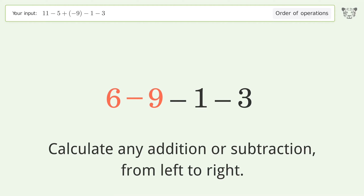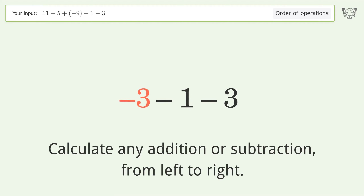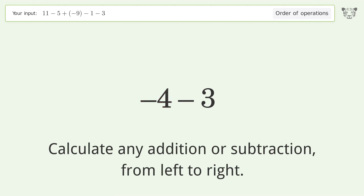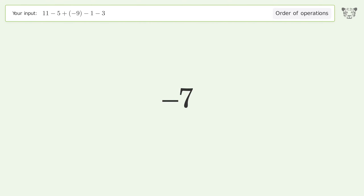6 minus 9 equals negative 3. Negative 3 minus 1 equals negative 4. Negative 4 minus 3 equals negative 7. And so the final result is negative 7.